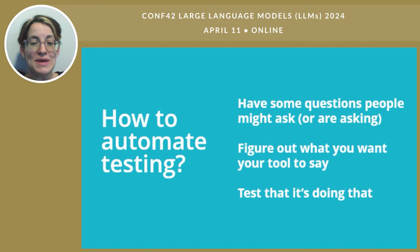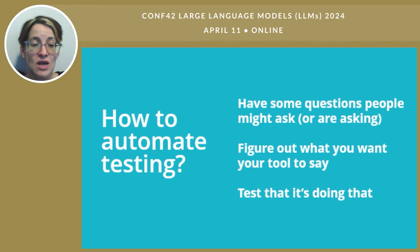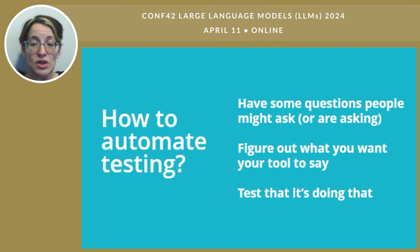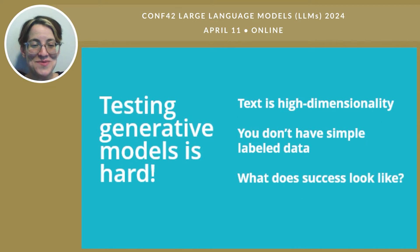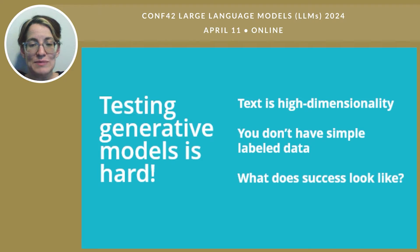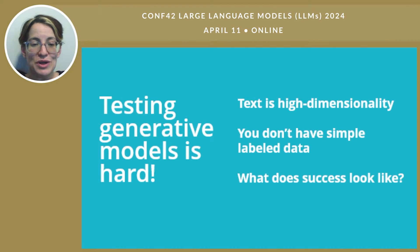Let's talk about how to automate testing. Broadly, we test to make sure that our tools are doing what we want them to do. So what do you want your tool to do? What are some questions you want it to be able to answer? What does a good answer look like? What does a bad answer look like? Now test that it's doing that. Just test that it's doing what you want it to be doing — we do that all the time for machine learning problems generally and NLP specifically. But actually, this is not that easy. It's actually pretty hard.